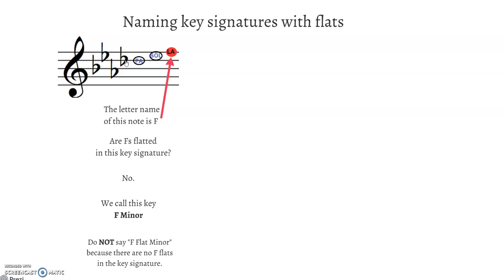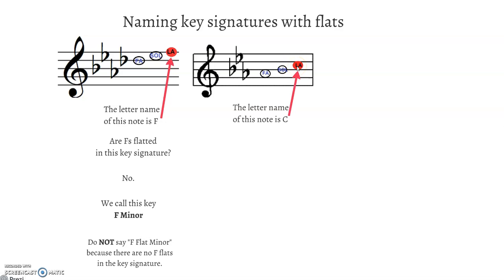Don't say F flat minor. That's wrong. Here's La. The letter name of that note is C. Are C's flatted in this key signature? B E A. No, they are not. So we call this C minor. Don't say C flat minor. That's the wrong answer.